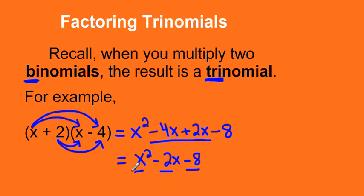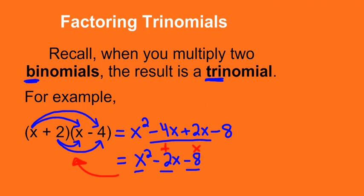Now it's not a coincidence that if we take the last two terms, 2 times negative 4, we get the last number of the trinomial. So we multiply those two terms to get the last number. And if we add these two terms — 2 plus negative 4 — it gives us the middle term. So if we add them, we get the middle term; if we multiply them, we get the last term. Now let's look at this in reverse: if we were to factor a trinomial, our result is going to look like two binomials multiplied together.